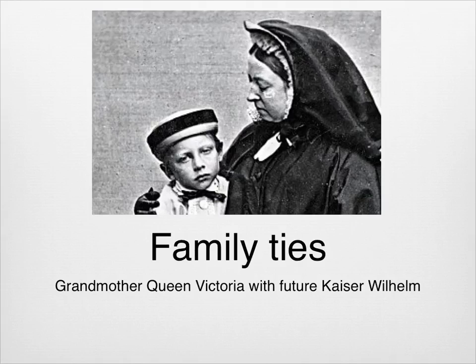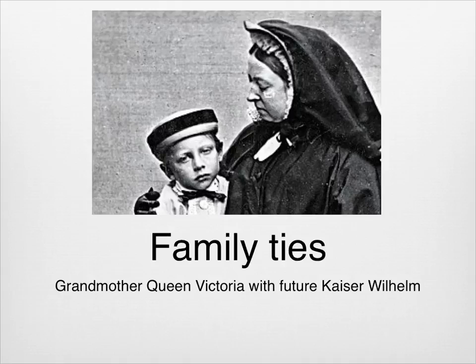Queen Victoria had a lot of children, and as was the practice of monarchs in that day, she married them off to other European royalty in the interest of world peace and probably also of British domination. George, Nicky, and Willie spent summers together in England. Interestingly, in light of the Great War's alliances, George and Nicky were best friends, but no one liked Willie.